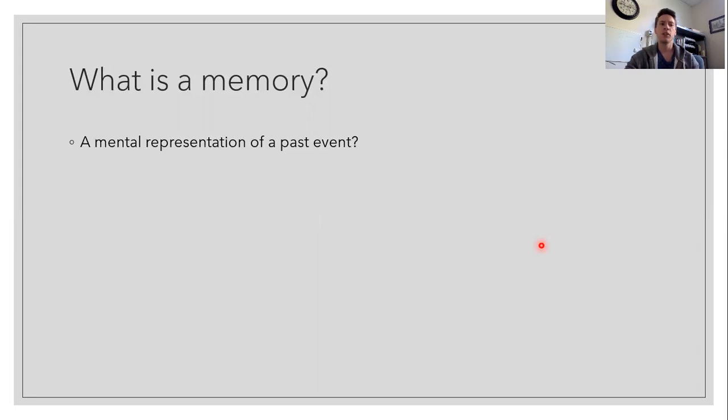And most of your definitions would probably converge on something like, a memory is something to do with the mind. So it's a mental representation. And I'm pretty sure all of you would say something about how the memory pertains to a past event, something that has already transpired.